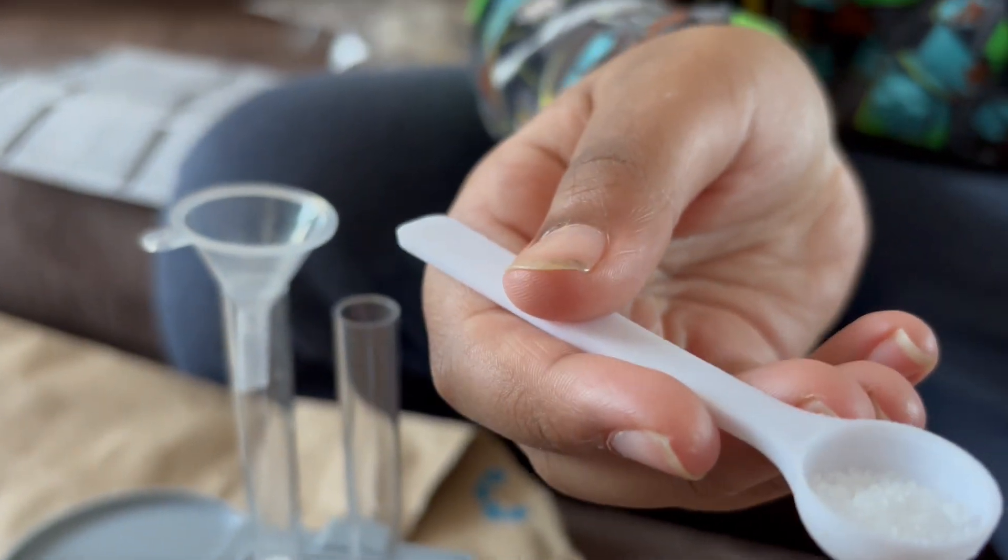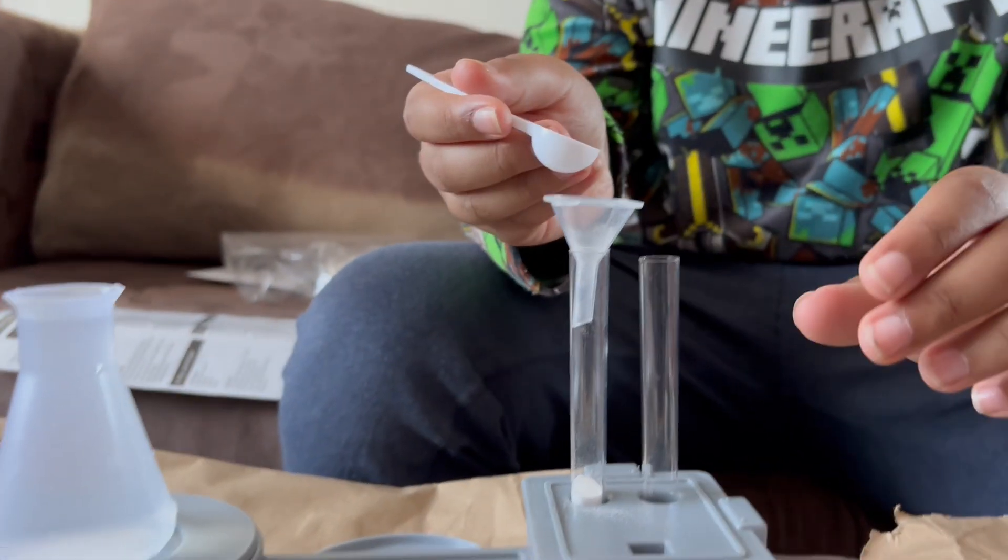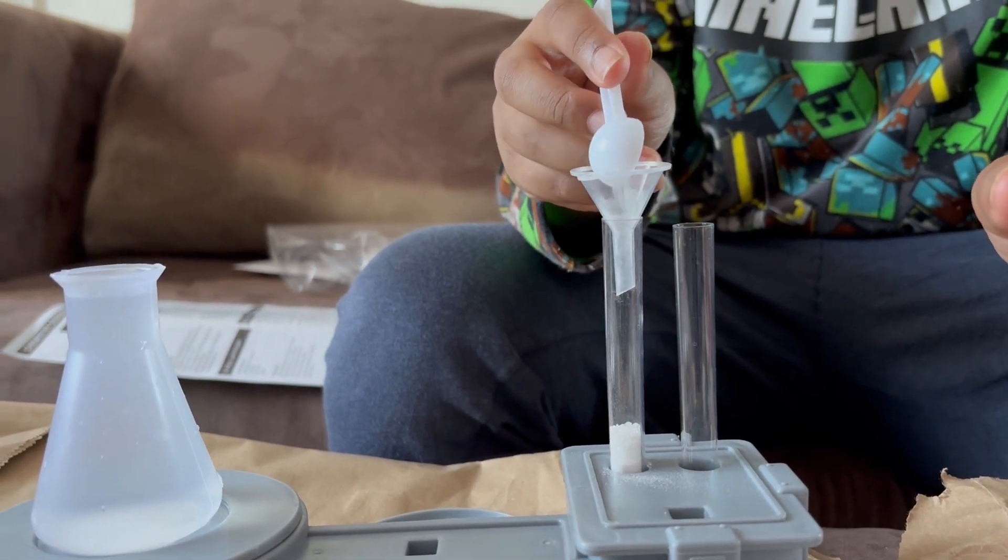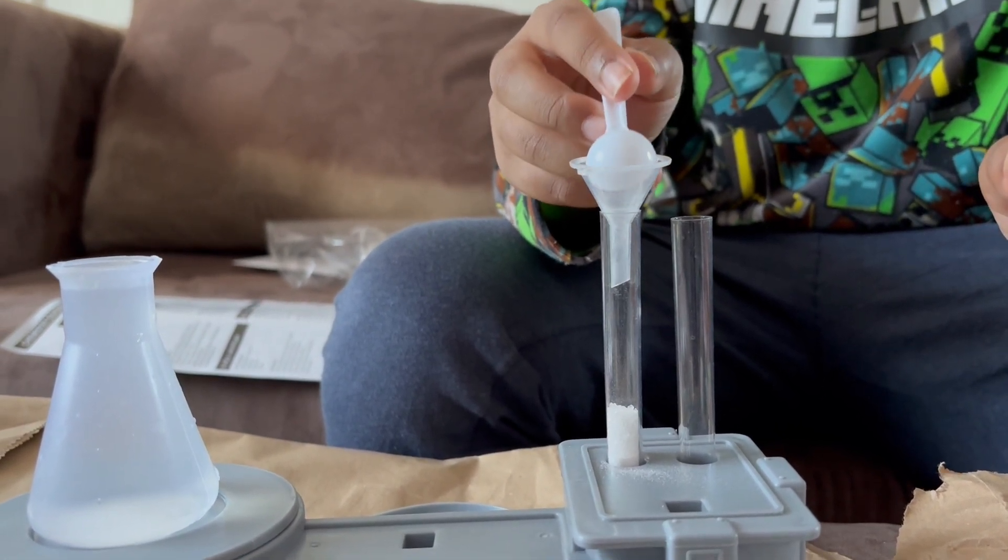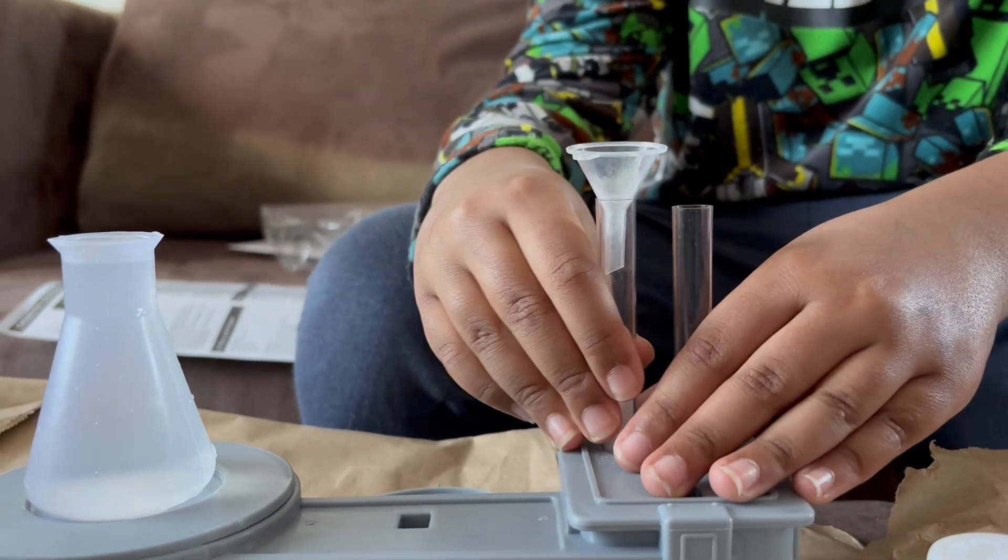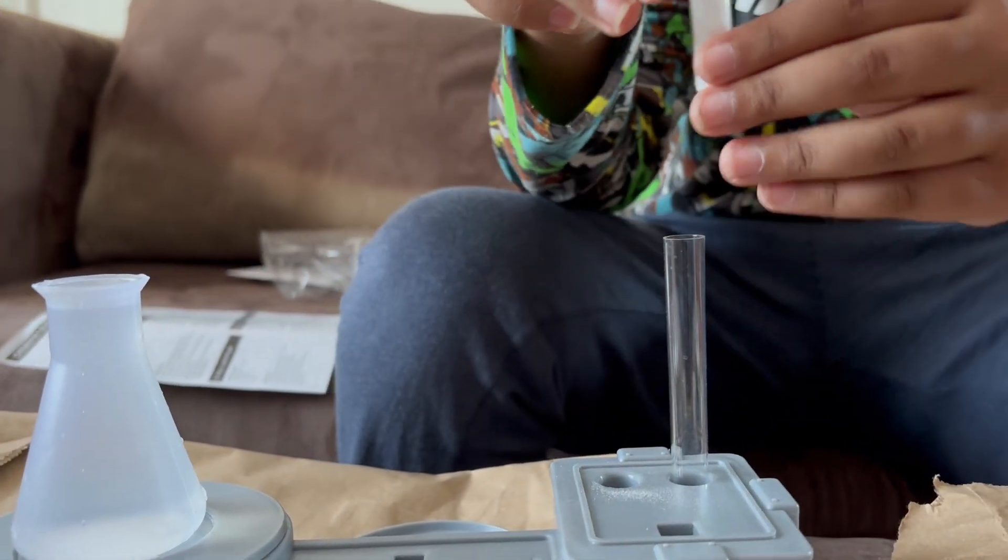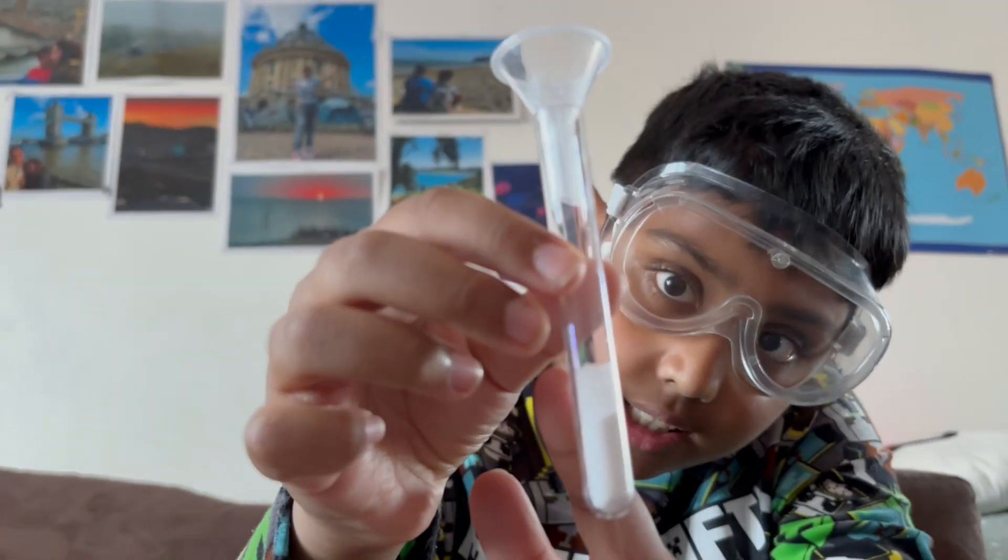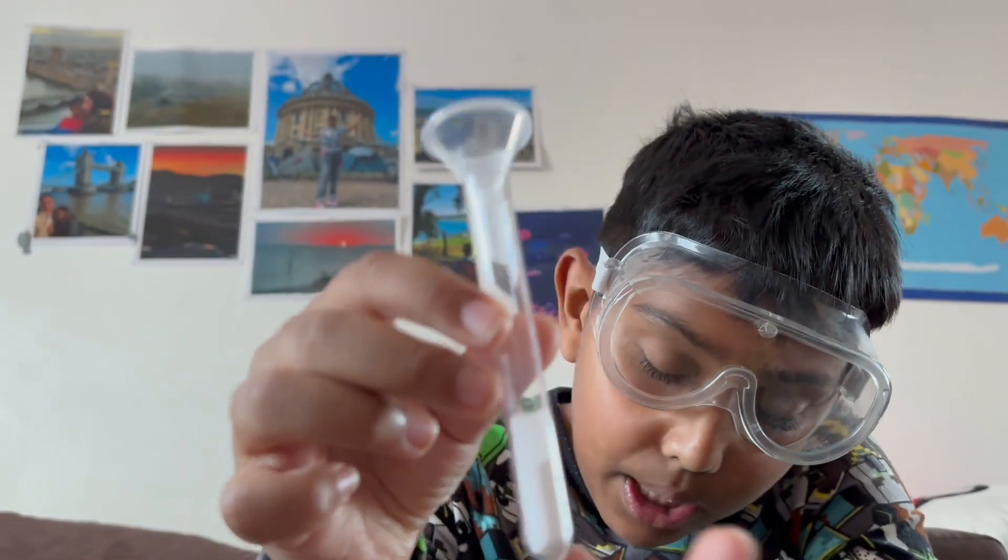This is my citric acid so I'm gonna pour the citric acid in with the baking soda, just like that. Make sure you don't put any citric acid in the water yet because it can make a chemical reaction that we don't want. So right now you can see here that there's citric acid and there's baking soda.